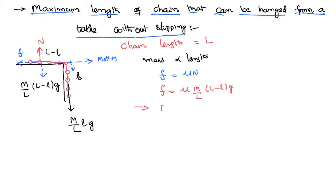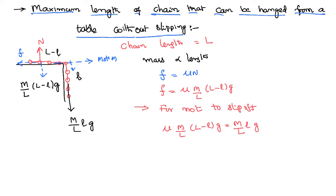For the chain not to slip off, the force due to friction shall be balanced by the force due to the portion of the chain that is hanging — the weight which creates the tension. Setting them equal and cancelling the g and M/L terms, what remains is: μ(L − l) = l.